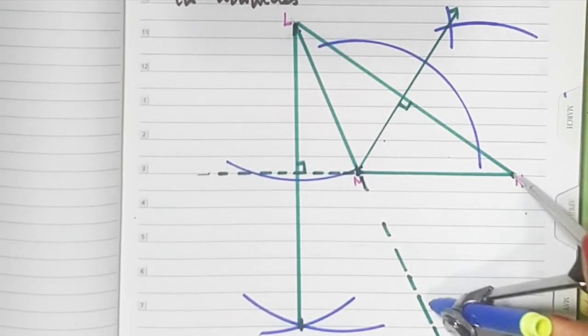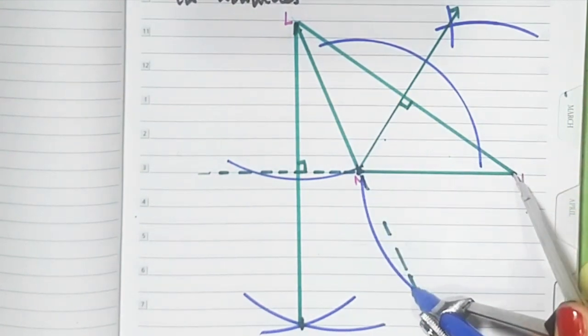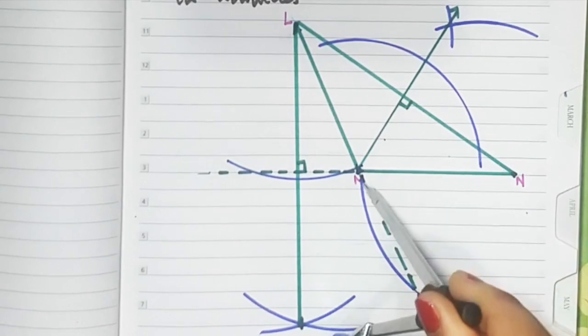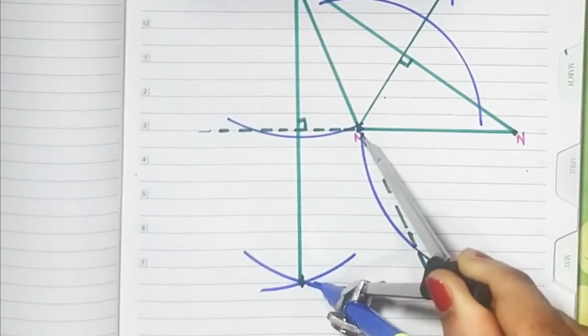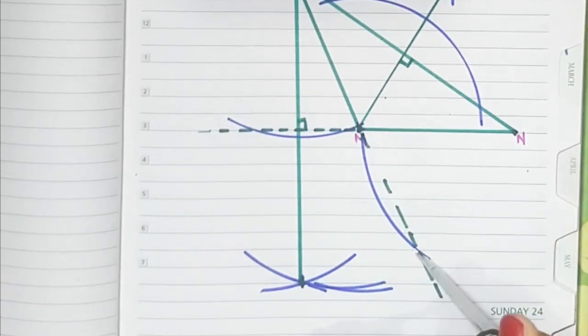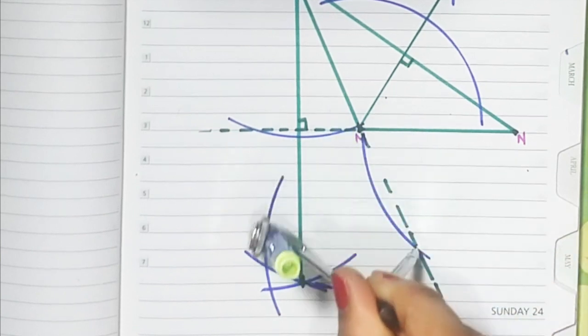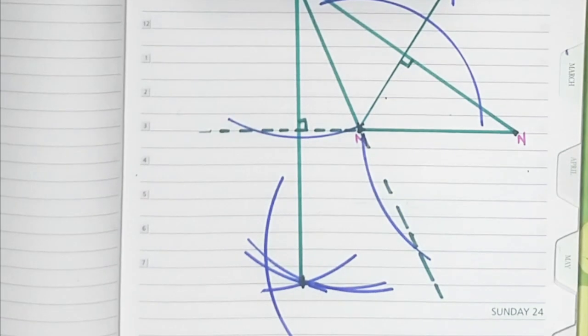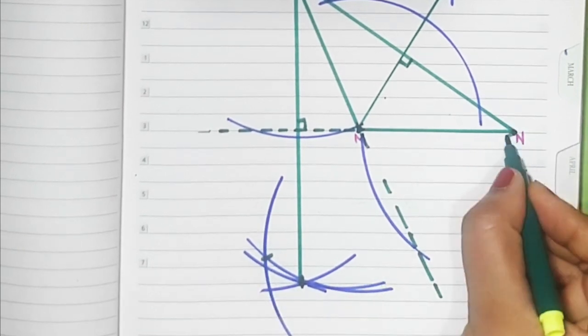Now from N, draw a smiling face. From this point, draw an arc. From this point, draw another arc.